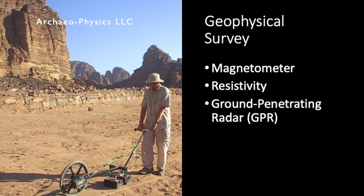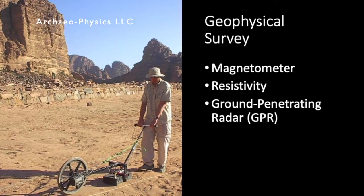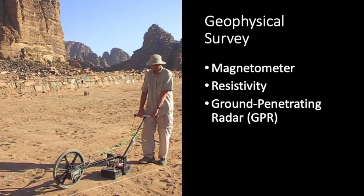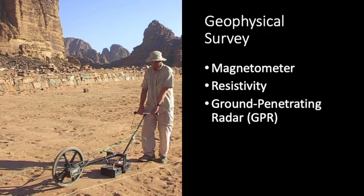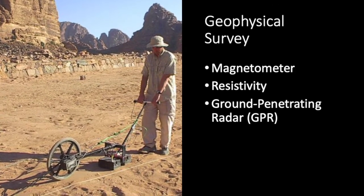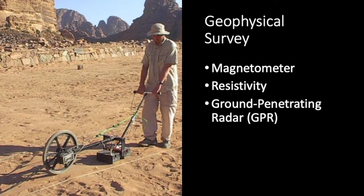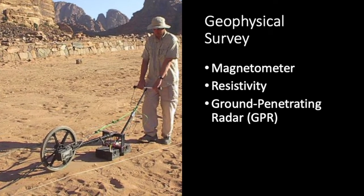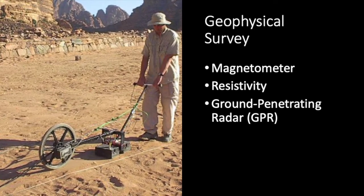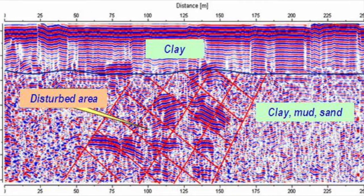Geophysical surveys rely on variations in the magnetic or electrical characteristics, or the density of things that are buried in the ground. Their advantage is that overlying sediment is effectively transparent to them, so that they can provide at least a blurry picture of buried features, such as walls and ditches. On the other hand, they tend to require very closely spaced measurements, which makes them relatively costly.